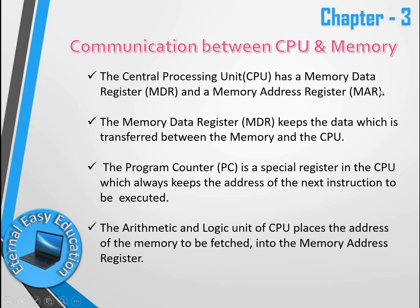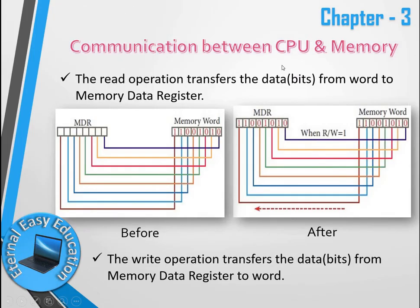So you have learned MDR, MAR, and PC — where PC stands for Program Counter. Regarding communication between CPU and memory, there are two operations: read and write. The read operation transfers data bits from a word in memory to the Memory Data Register (MDR).